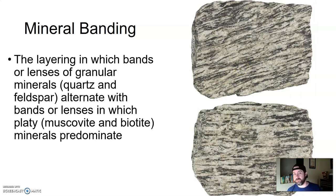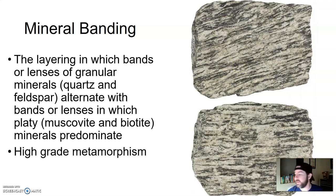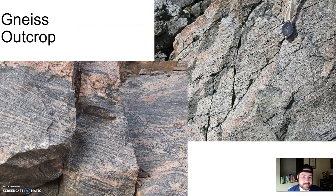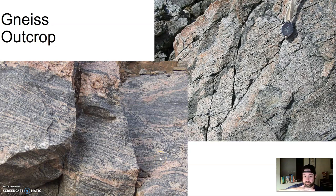The darker minerals predominate in the darker bands, so you get this kind of layering-bands look to it. This is a high-grade metamorphism. A type of metamorphic rock that undergoes mineral banding, or high-grade metamorphism, is gneiss — pronounced 'nice,' G-N-E-I-S-S. Here are some gneiss outcrops — you can see that these aren't layers of rock anymore; it's minerals forming these kinds of bands.